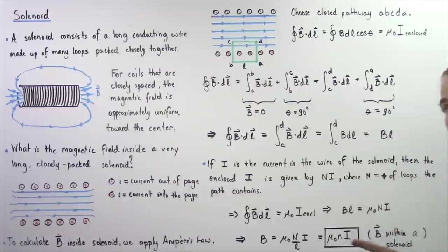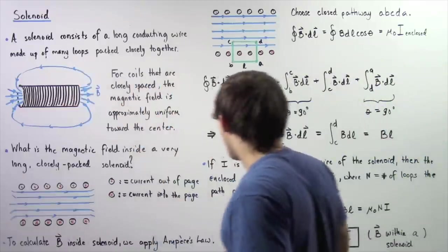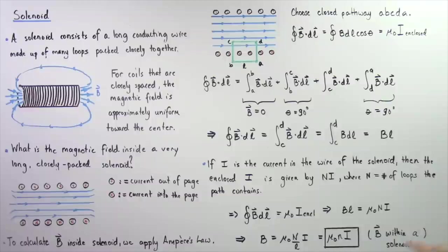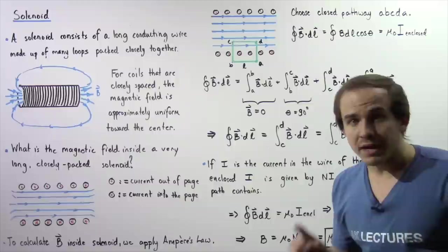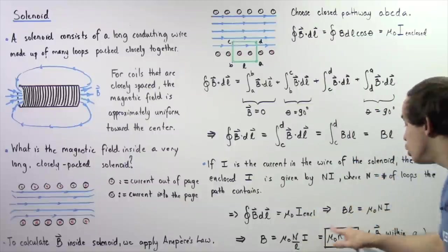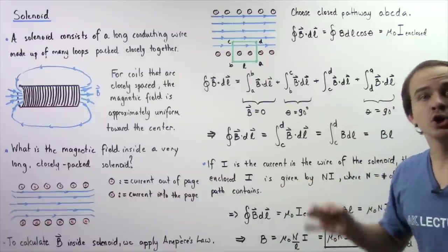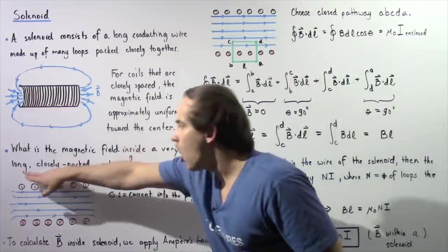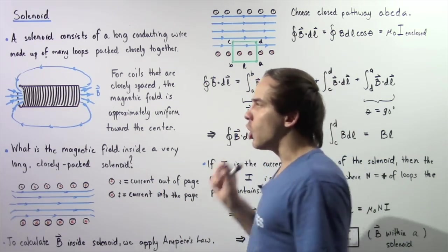Rearranging and solving for B, we find that the magnetic field inside our solenoid equals mu-naught multiplied by N over L, multiplied by I, where I is the electric current in the solenoid. It is very common to represent N divided by L as lowercase n, the number of loops per unit length. So the equation B equals mu-naught times n times I gives the magnetic field within a solenoid assumed to be very long — in fact infinitely long — with loops packed very closely together.